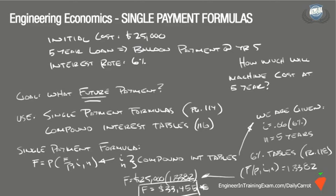Lastly, it is also very important that you are referencing the correct table and components for interest and period. For example, in this problem we were referencing the interest table for 6%, but there are many tables to choose from and it's very easy to reference some other table, say 8% or 10%. These wrong variables would ultimately lead to a wrong answer.